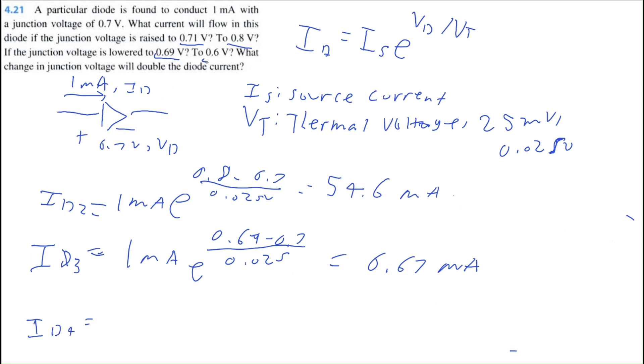What would ID4 be for this 0.6 volts? That's 1 milliamp times E to the power of 0.6 minus 0.7 divided by 0.025. We get 18.3 microamps. So now it's a lot less.